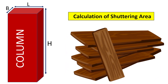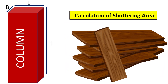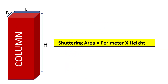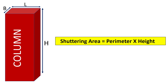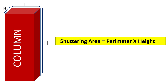First, let's talk about the shuttering area of a column. We calculate it by using the simple formula: shuttering area = perimeter × height. In construction, we often encounter three main shapes of columns: rectangular, square, and circular.